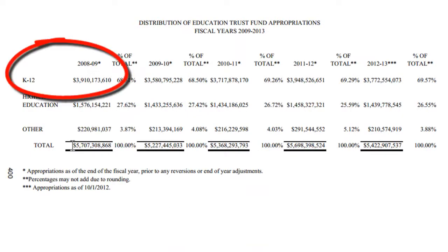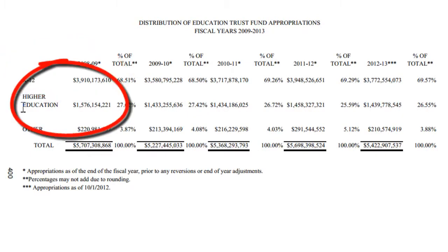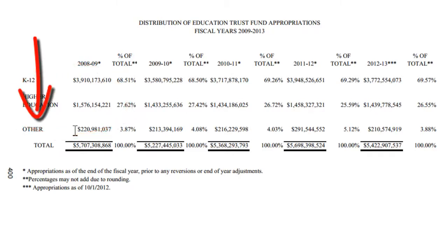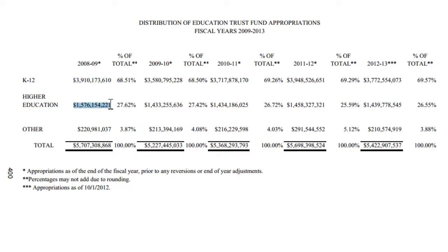The last page has the K-12 information, the higher education information, and a category called Other, which we will look at another time. For now, all we want to do is copy and paste these numbers and put them into our spreadsheet.